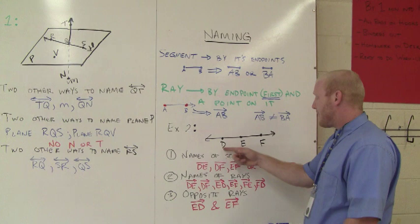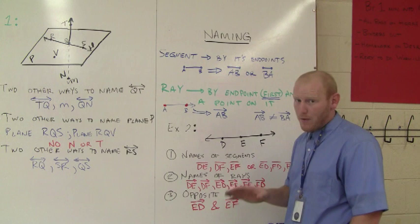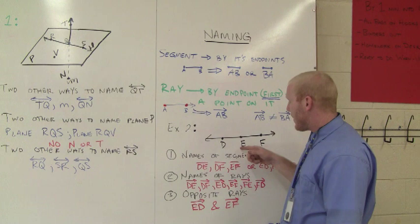Names of rays. I can have DE, DF, ED, EF, FE, and FD. Now, rays are important how you name them. So make sure you name them correctly. Remember, you start with the endpoint and go with direction. So ED is different than EF.